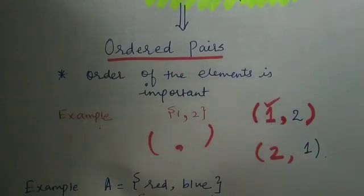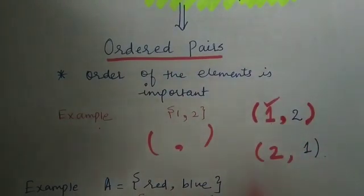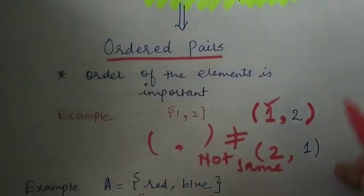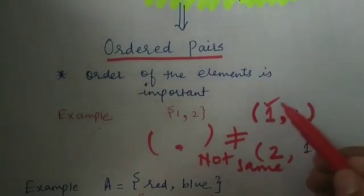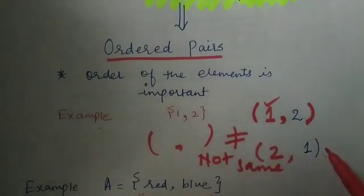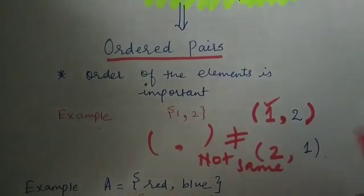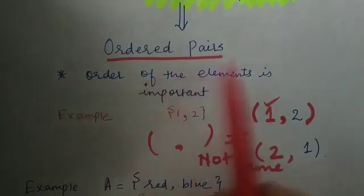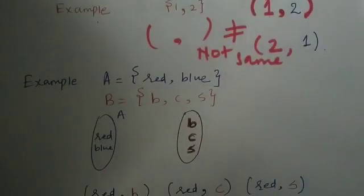Now the question is: are these two elements the same? No, they are not the same. In the first tuple, position one is taken by 1 and position two by 2, whereas in the second tuple, position one is taken by 2 and position two by 1. This is the difference between the two elements, and that is where the ordered pair concept is important.